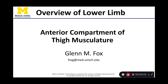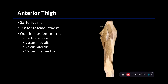Hi everyone. Let's talk about the musculature of the anterior compartment of the thigh. What you're seeing here is the proximal upper limb. We can see the anterior superior iliac spine of the pelvis here, and the pubic symphysis would be approximately here. We can see a slight contour of the gluteal region. This is the lateral side and this is the medial side. The head of the femur would meet the acetabulum at the hip, and the knee joint would be there.